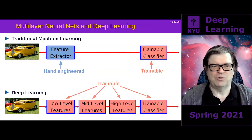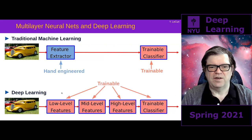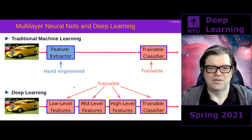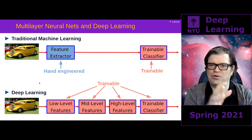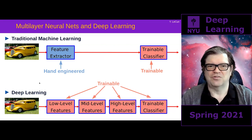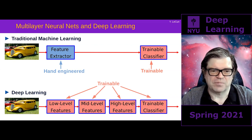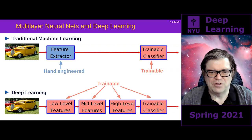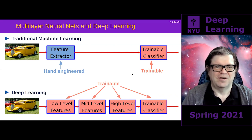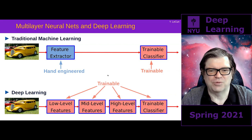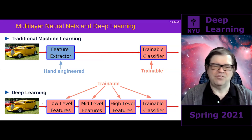Basically, what deep learning has done is replace this manual hand-engineering of the feature extractor with a stack of trainable modules. In deep learning, the only reason why it's called 'deep' is that we stack a bunch of modules, each of which transforms the input into something at a slightly higher level of abstraction, and then we train the entire system end-to-end. The pinkish modules indicate the trainable ones, and the blue modules are the fixed, hand-engineered ones.